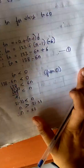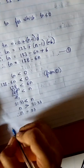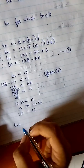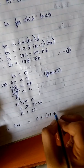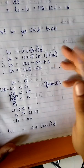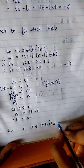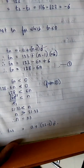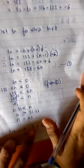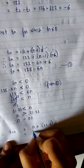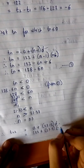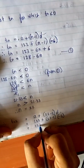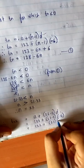Now all we have to do is find the term for n = 22, that is, find T22. T22 = A + (22−1) × D = 122 + 21 × (−6). The common difference is minus 6.